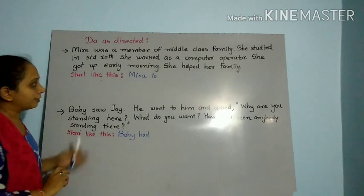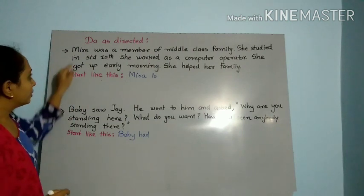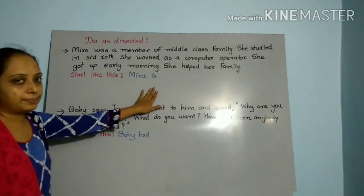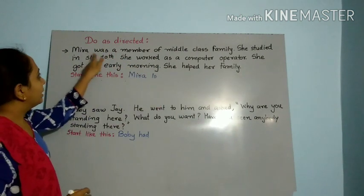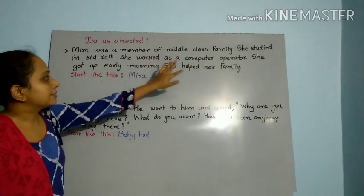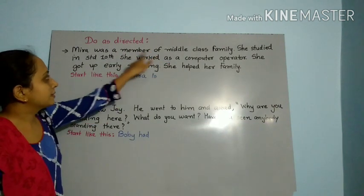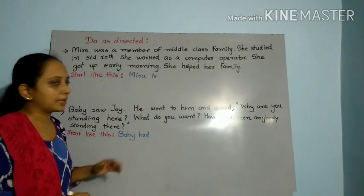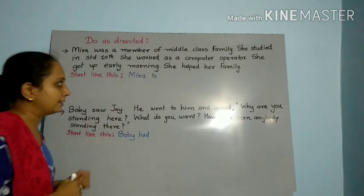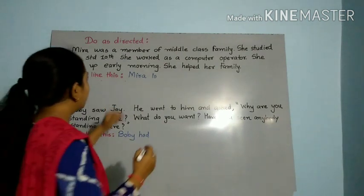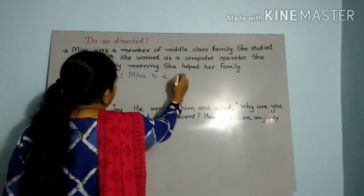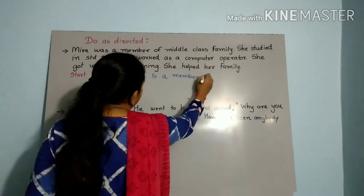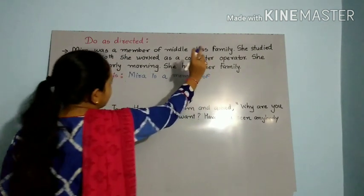So we will do this. It says Mira — Mira was, is — past, present. So, Mira was a member of middle class family. She already changed the sentence. I am going to change the sentence: Mira is a member of middle class family.